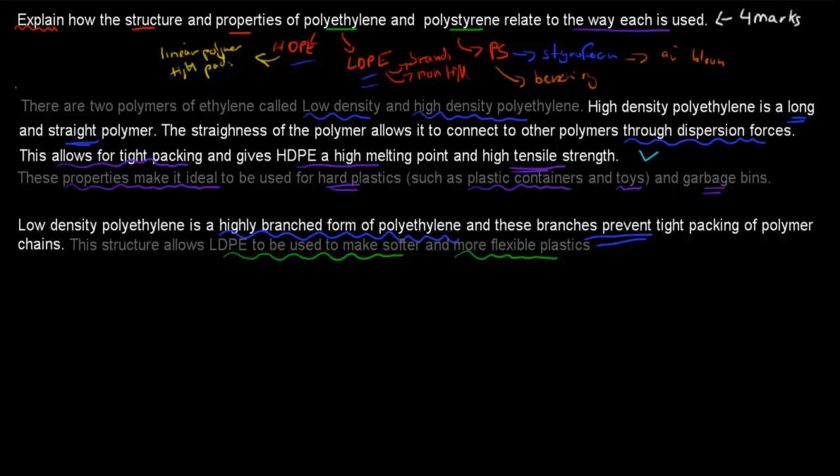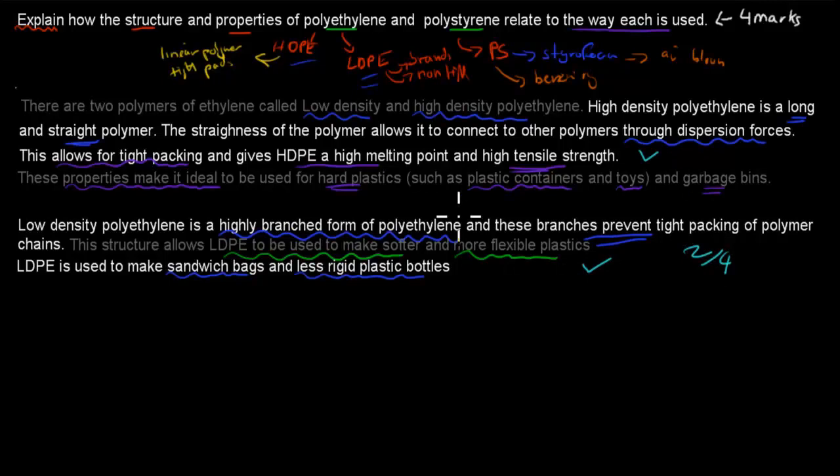Then I wrote about what they're being used in. Low-density polyethylene is used to make sandwich bags and less rigid plastic bags. That's because it has a softer and more flexible plastic. So now we've covered high-density and low-density polyethylene, and we've already gotten at least two marks out of four, much more likely to have gotten three marks for this so far.